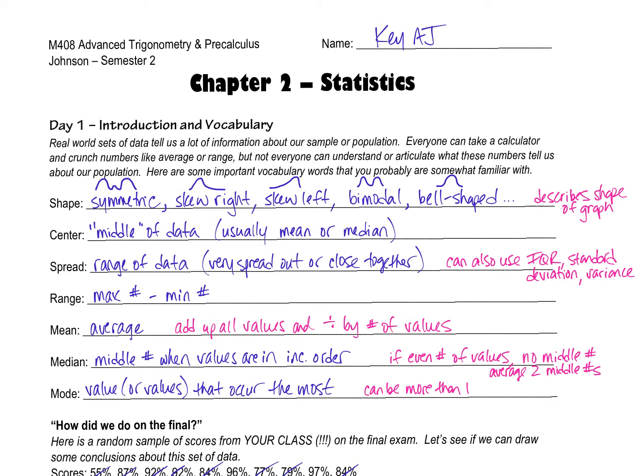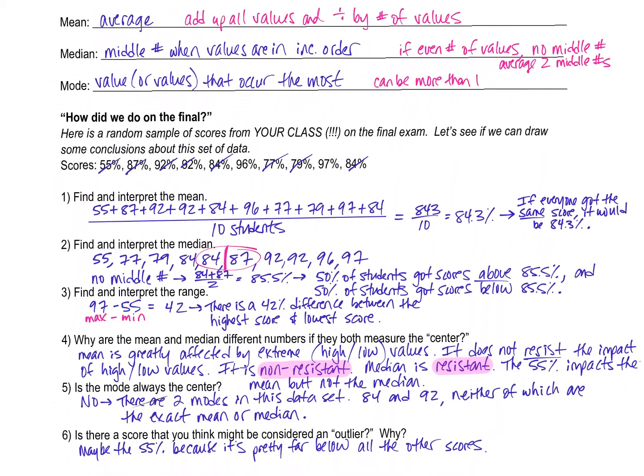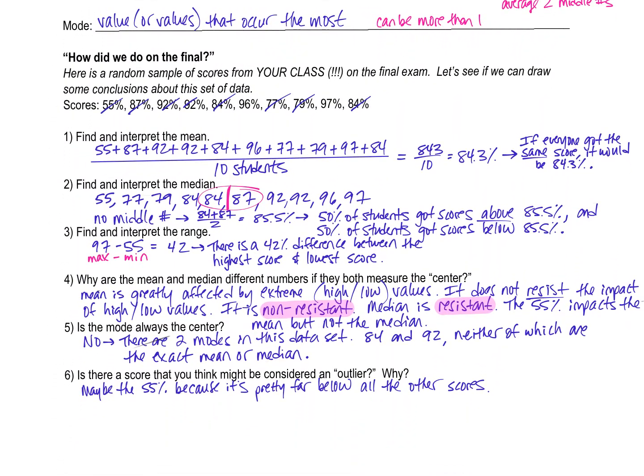So that is all of our introduction to statistics vocabulary. So let me scroll down and I have already completed this very first question. Looks like a lot of writing but I'm going to go through this example one at a time. So very random sample of scores from my class of my students on the final exam. I actually did number you guys and pull numbers out of a hat to decide whose percentages I wanted to study for this very first example.